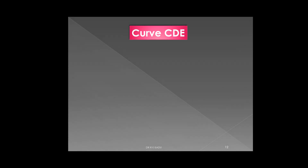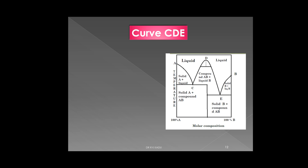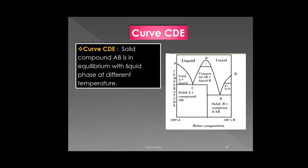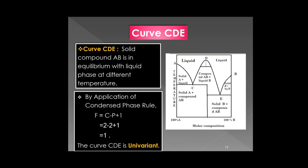The third curve is curve CDE. On this curve, solid compound AB is in equilibrium with the liquid phase at different temperatures — at point C the temperature is higher, and at point E it is somewhat lower. Applying the condensed phase rule: F = C − P + 1 = 2 − 2 + 1 = 1. Hence, the system is univariant.